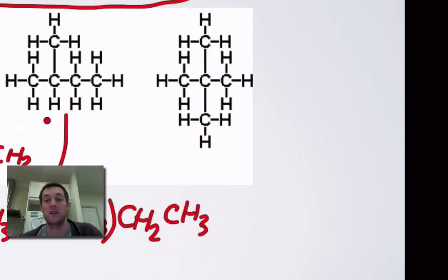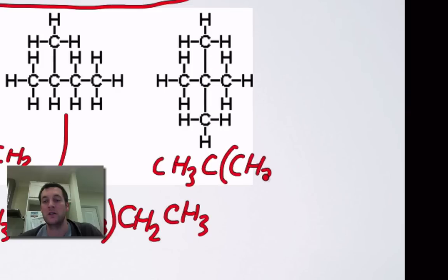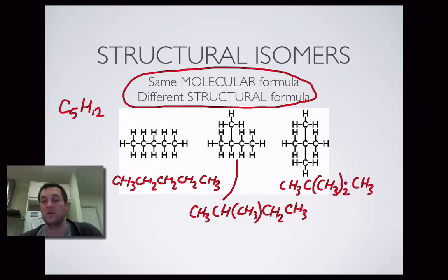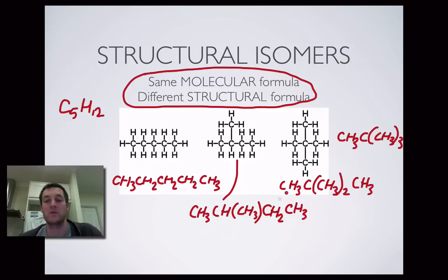For 2,2-dimethylpropane, we start with CH3, then a C with two CH3 groups attached, then CH3 at the end. You can't write the same structural formula for these three molecules, which means they are structural isomers. Remember that definition and try to understand what it means.